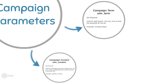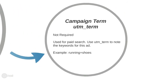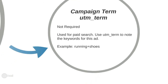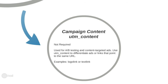Then we have campaign term and campaign content, which can be used in a lot of different ways. For example, campaign term can be used to determine the keyword used in a search campaign, or it can identify the targeting method used in a display campaign. In case of an email campaign, it can determine which link was clicked in the email template. Campaign content can be used to differentiate between email templates or ad copies in a Facebook campaign.